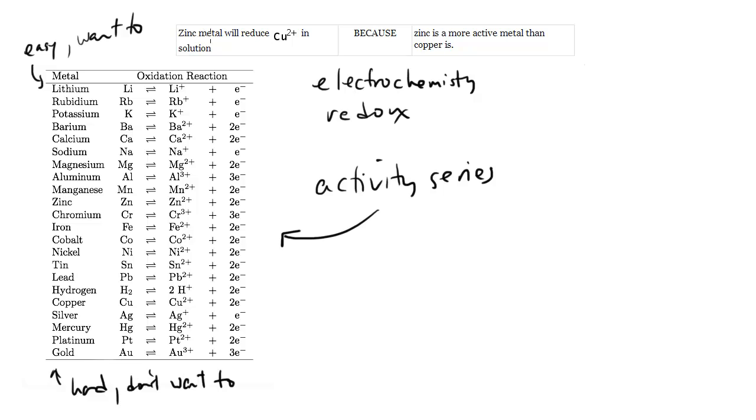Now what does it mean here? Zinc metal will reduce Cu 2 plus. Let's find the locations of each. So here's zinc and here is copper. So what does this mean? Since zinc is higher on the chart, zinc prefers to be positive more so than copper prefers to be positive.